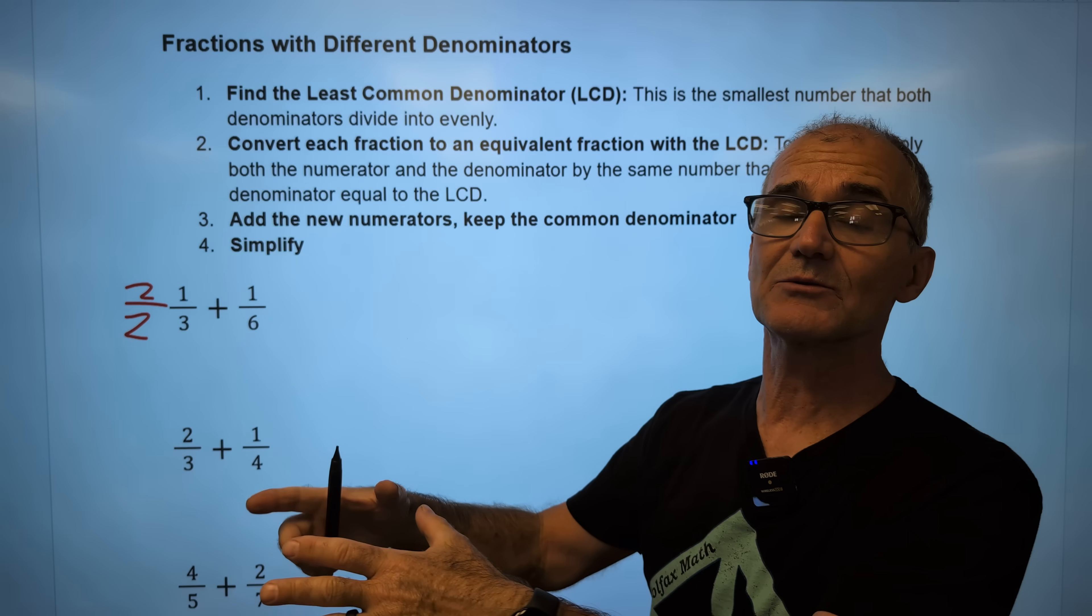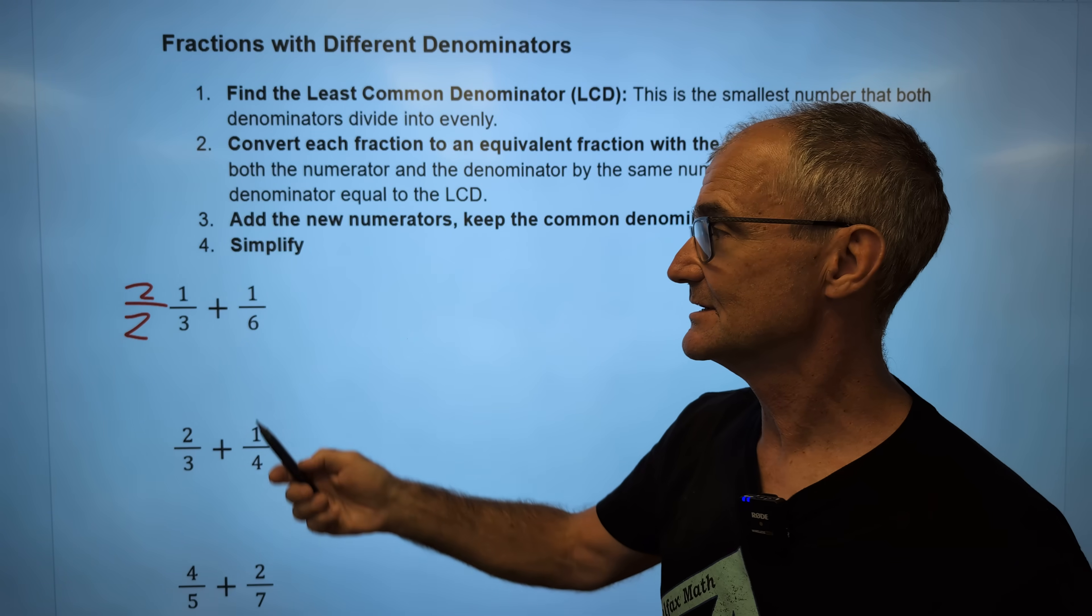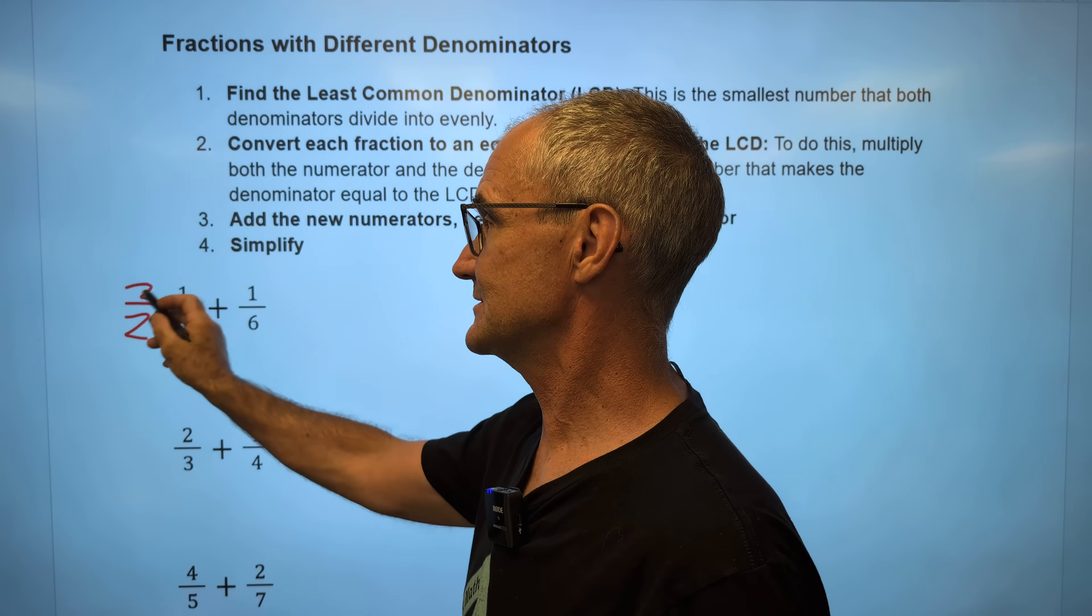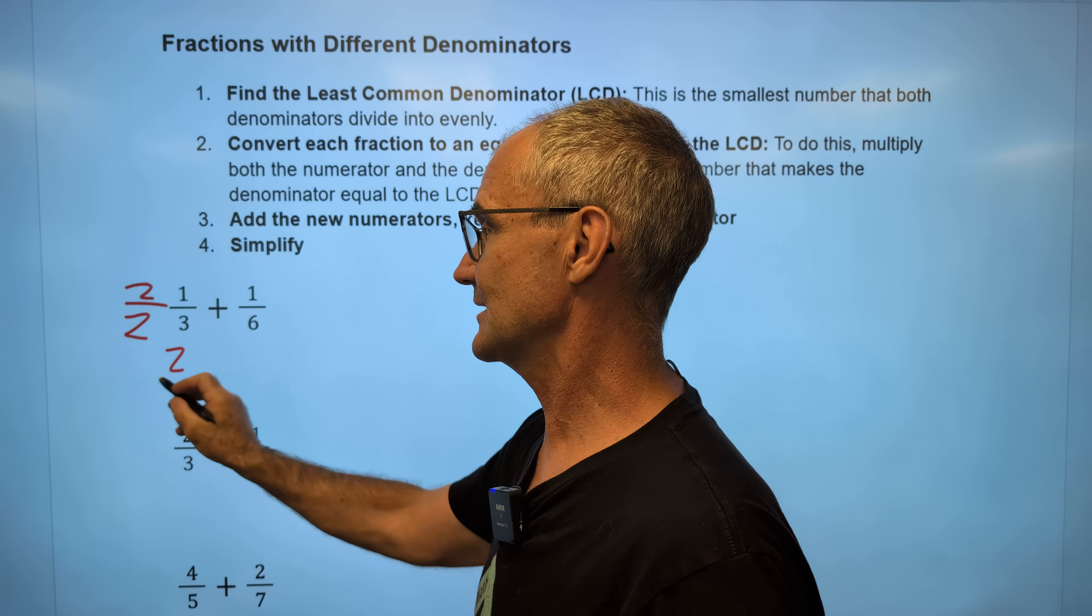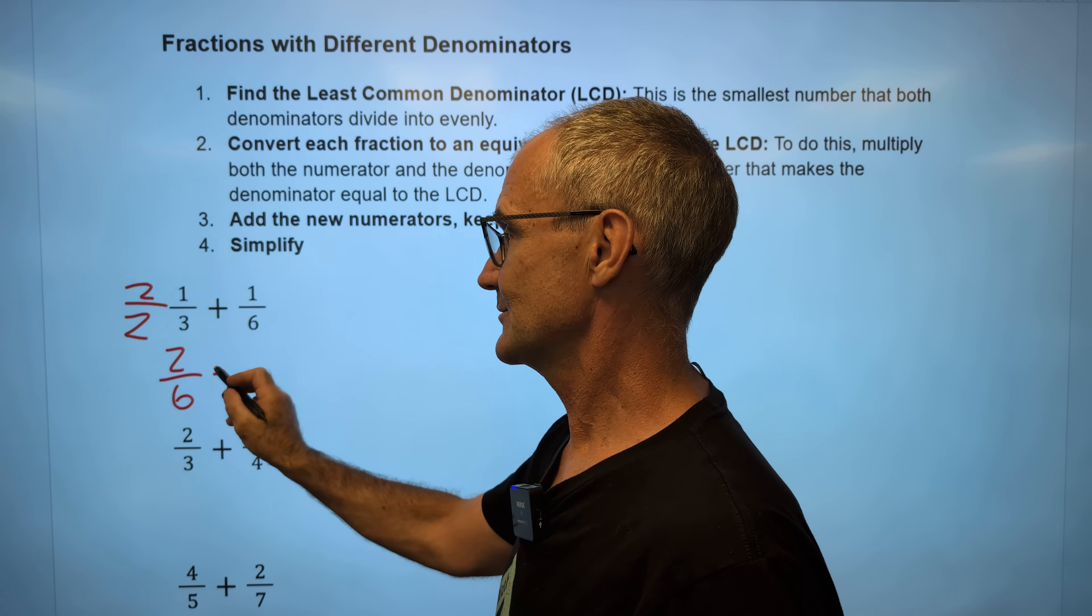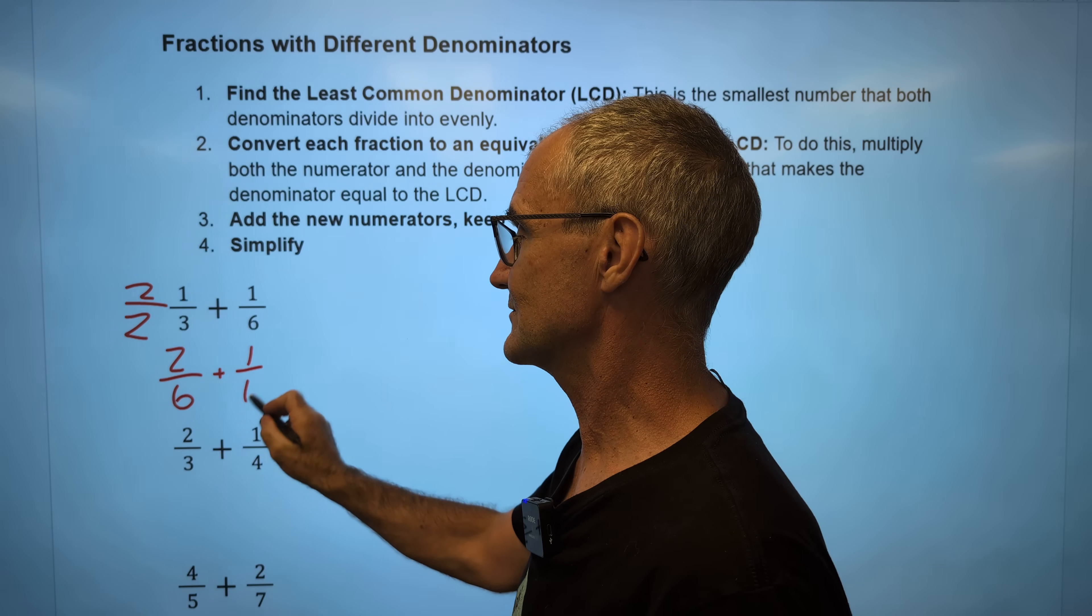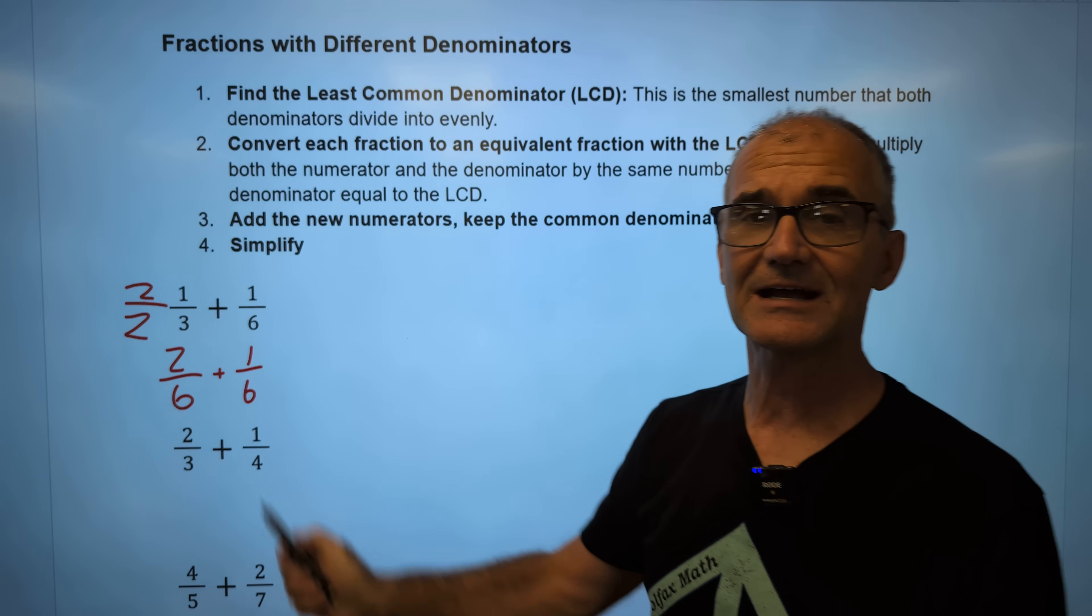Anything multiplied by one does not change the value. So I'm going to multiply by two over two to give me two times one, two. Two times three, six. Plus this fraction, one over six.